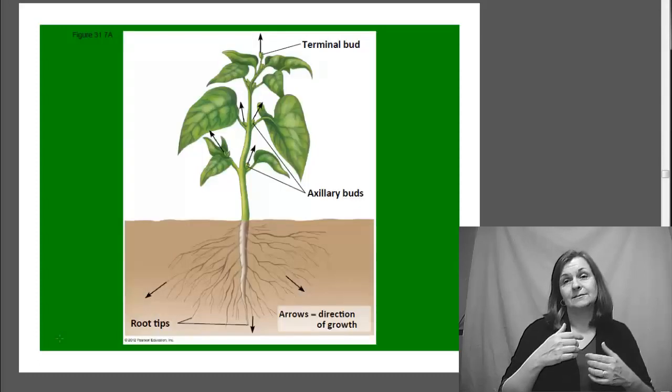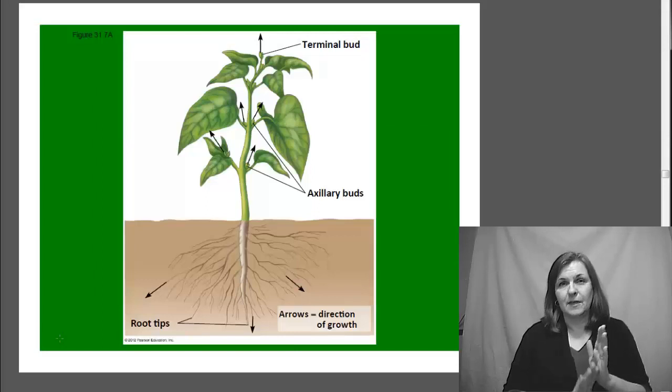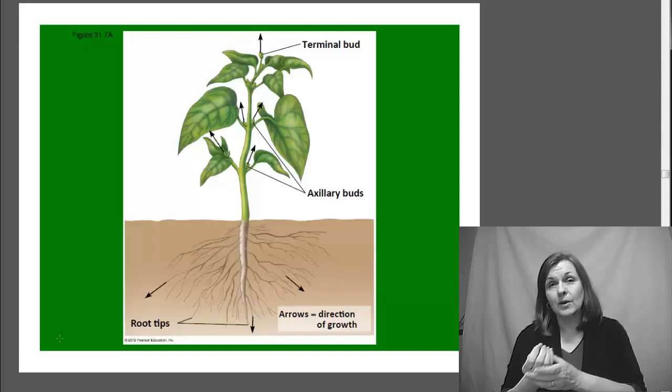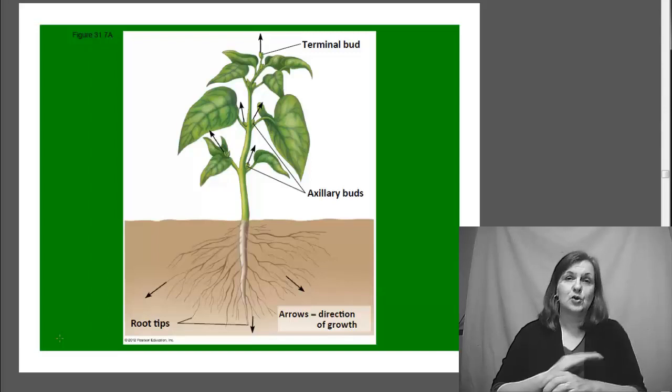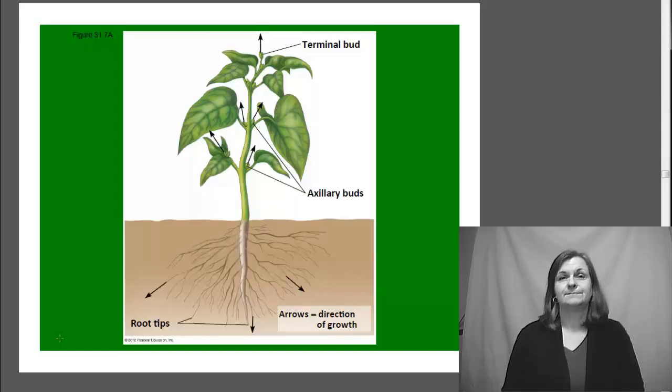In animals, we have what's called determinate growth. You reach a particular height and you stop growing. If you grew like a plant, you would still be growing throughout your entire lifetime, getting taller and taller and taller.